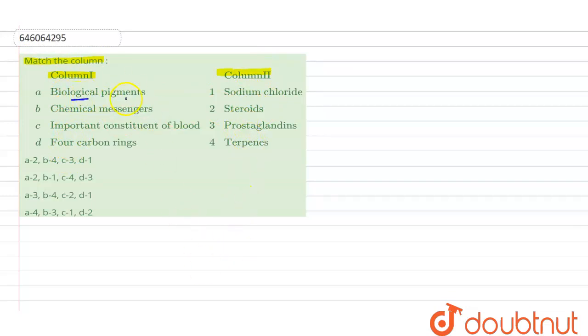The first one is biological pigments. Pigments are the ones which give the color. Here we see that terpenes act as biological pigments and they also act as the precursor for plant growth hormones. One of these hormones is gibberellins. So option A can match with the fourth on the other side.